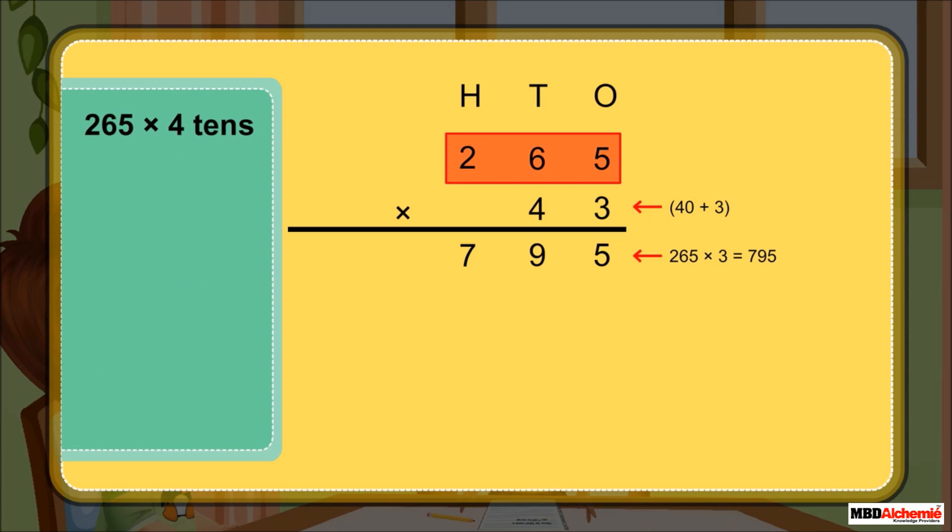Now multiply 265 by the digit at the tens place, that is, 4 tens. This means 265 times 40. To multiply by 40, we can first write a 0 here. Then we only have to multiply by 4.